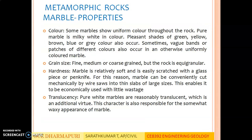Properties of Marble — Color: Some marbles show uniform color throughout the rock. Pure marble is milky white in color. Pleasant shades of green, yellow, brown, blue or grey are also found. Sometimes grey bands or patches of different colors also occur in an otherwise uniformly colored marble. Grain Size: Fine, medium or coarse grain, but the rock is equigranular — whether fine, medium or coarse, the grain size is uniform throughout the marble.